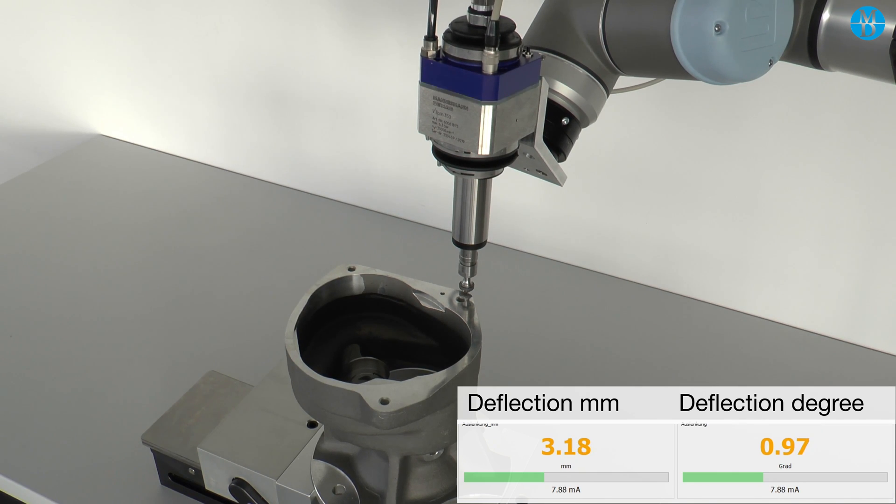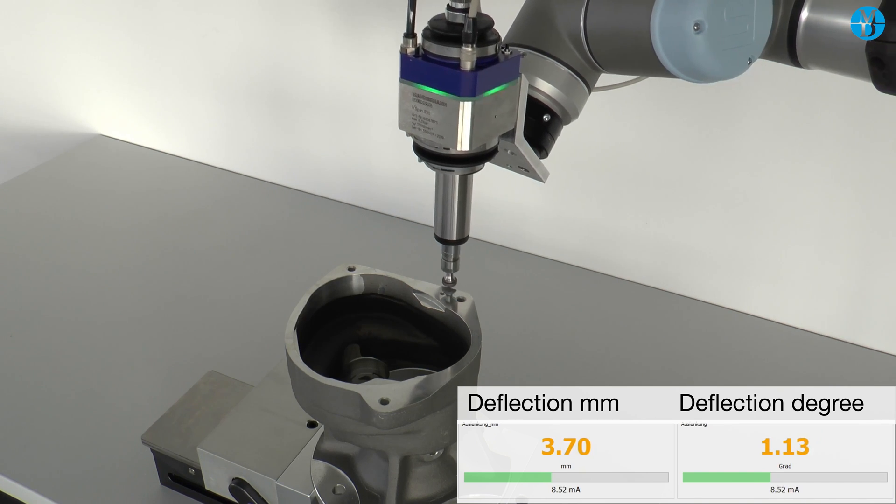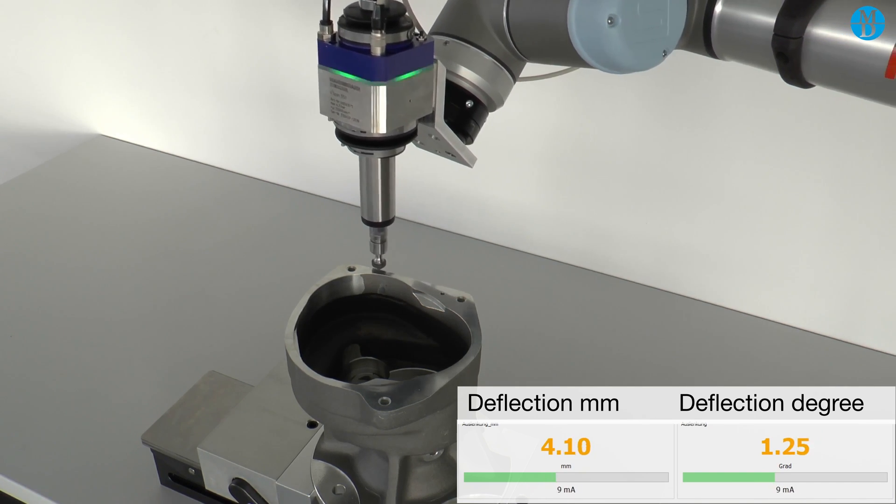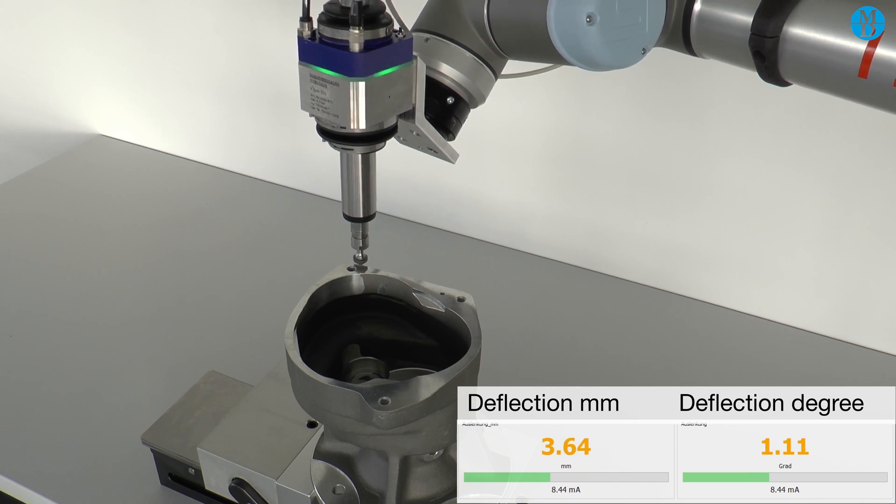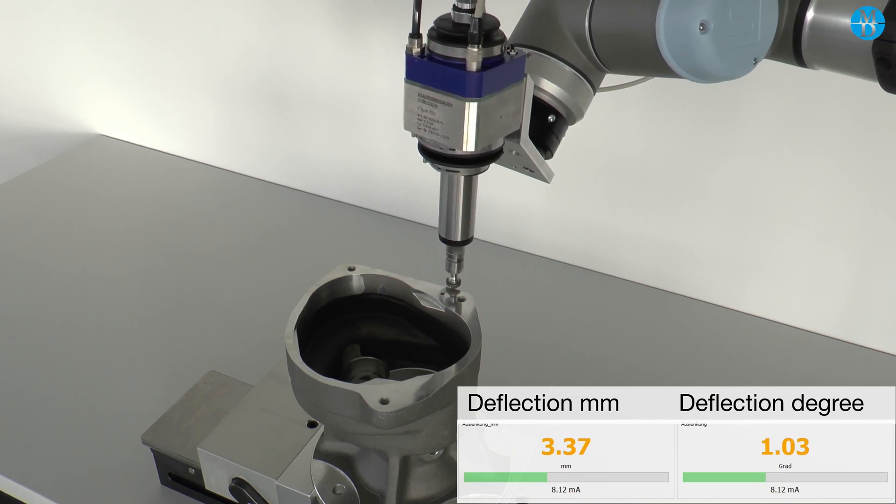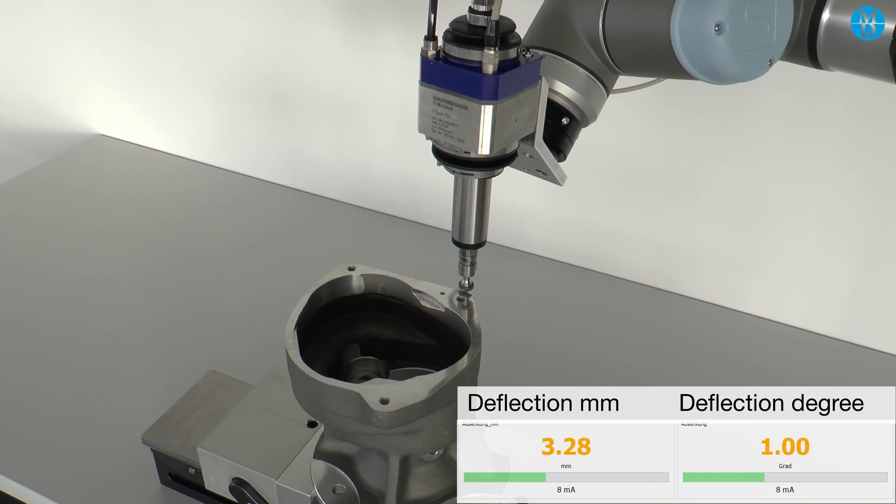0.9 looks good. So let's travel the path again and observe what the maximum deflection is. As you can see, the path can be traveled within our desired 0.7 and 1.5 degree threshold. It looks good.